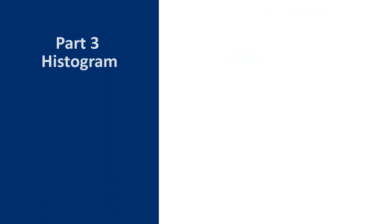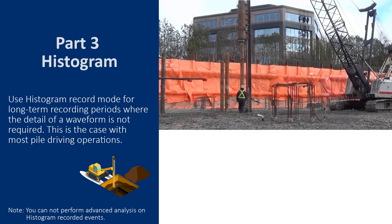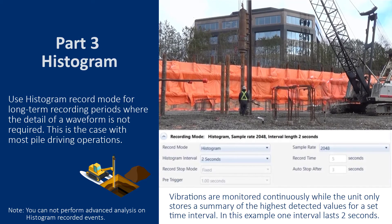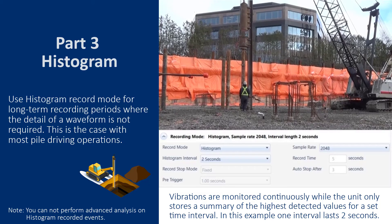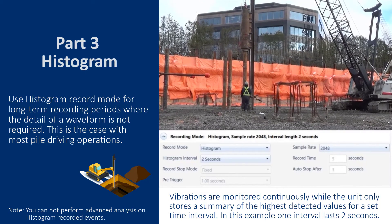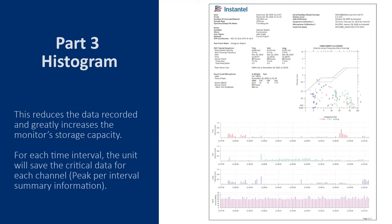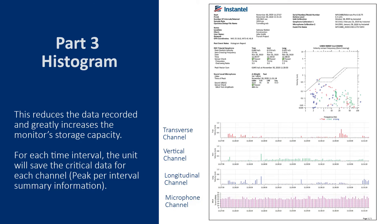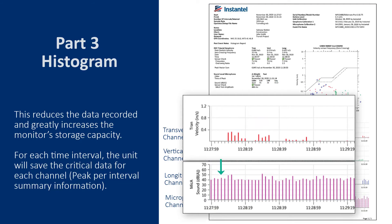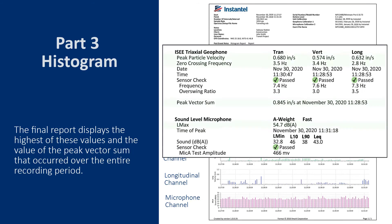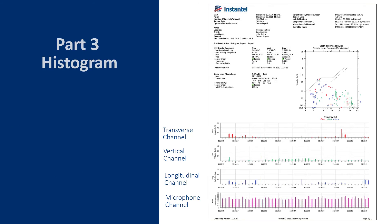The third record mode is Histogram. Use Histogram record mode for long-term recording periods where the detail of a waveform is not required — this is often the case in pile driving operations. Vibrations are monitored continuously while the unit only stores a summary of the highest detected values for a set time interval; in this example, one interval lasts two seconds. This reduces the data recorded and greatly increases the monitor's storage capacity. For each time interval, the unit saves the peak vibration, sound noise or air overpressure, and associated zero-crossing frequencies for each channel. The final report displays the highest of these values and the peak vector sum over the entire recording period.